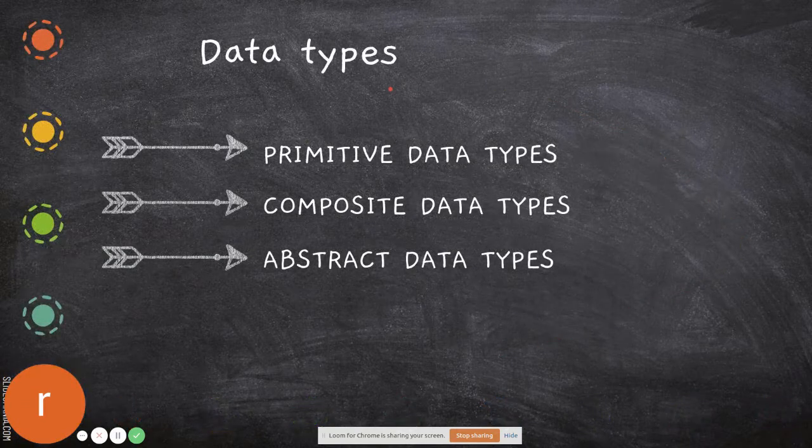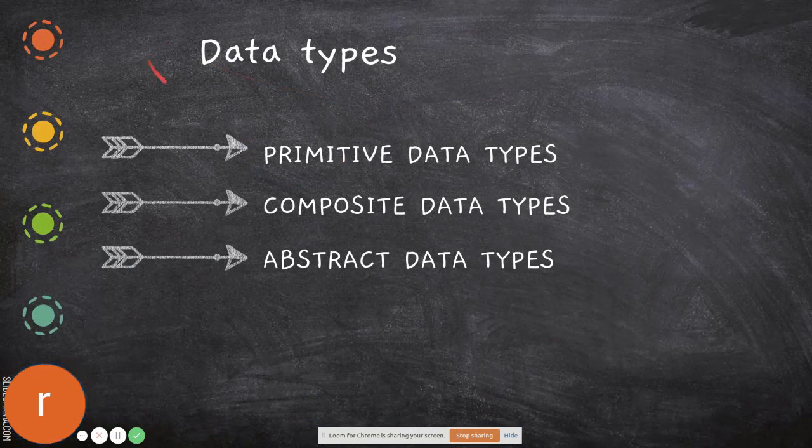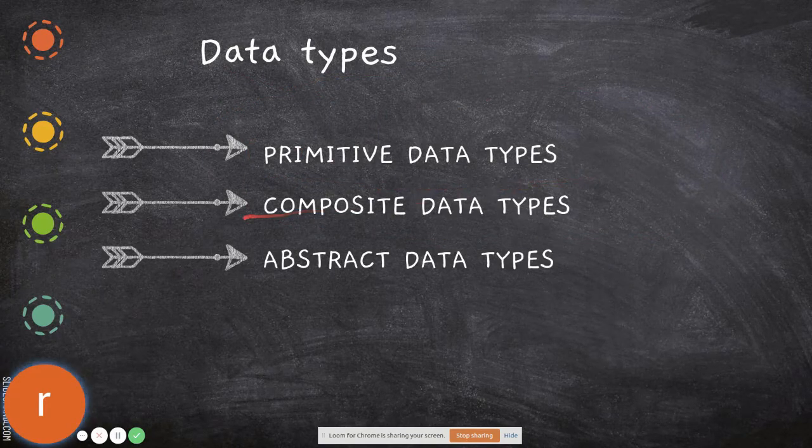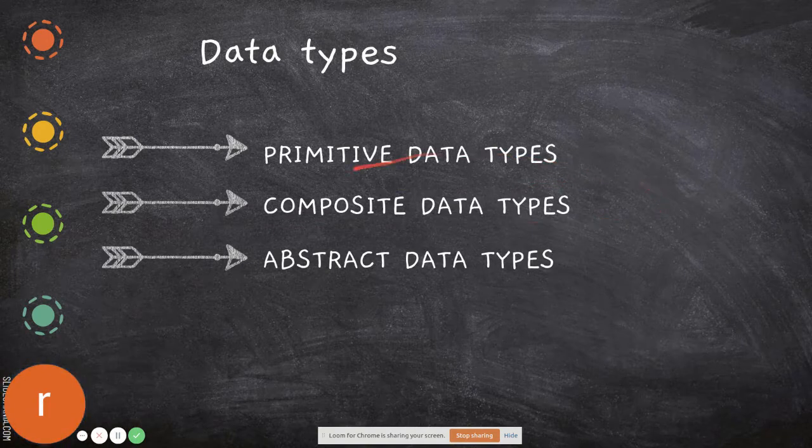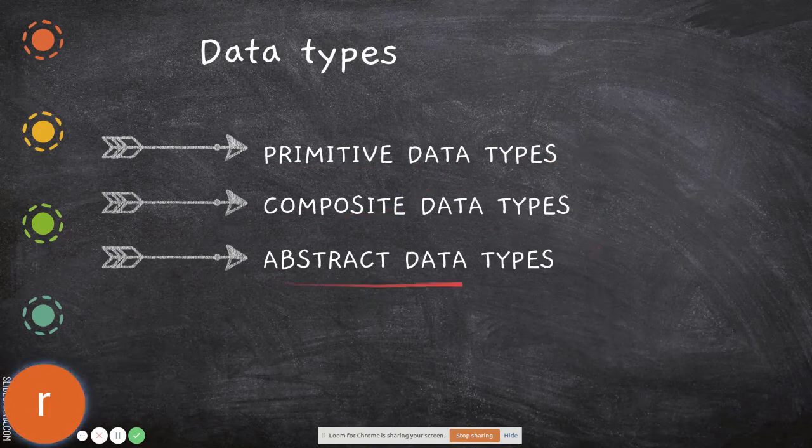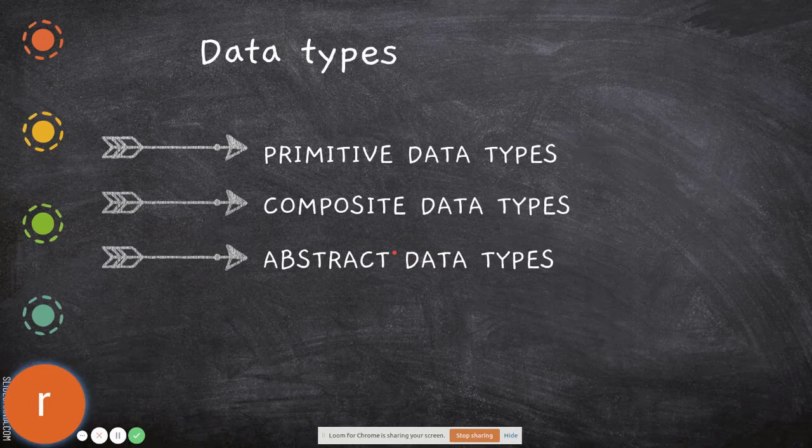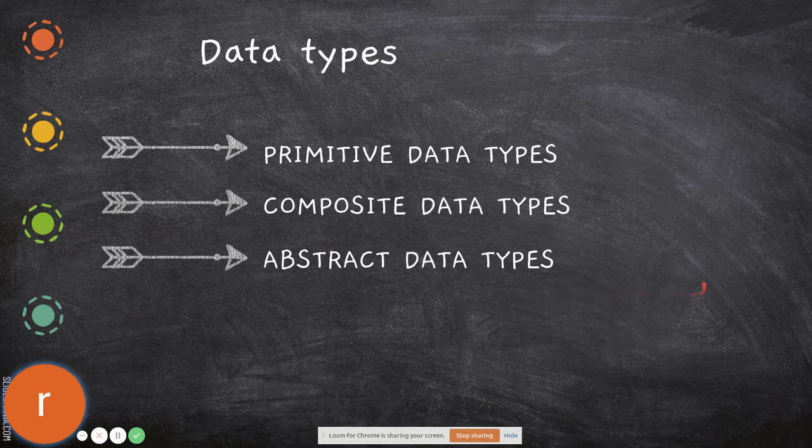In general, data types can be broadly divided into two: primitive data types and composite data types. Then there are abstract data types, which are functions we write without giving any implementation.